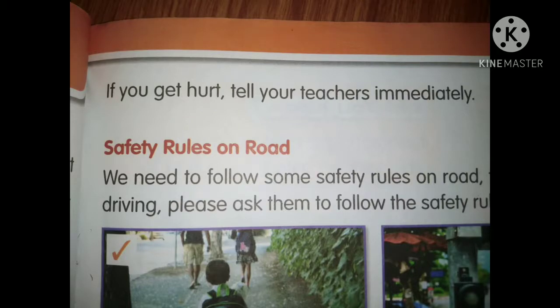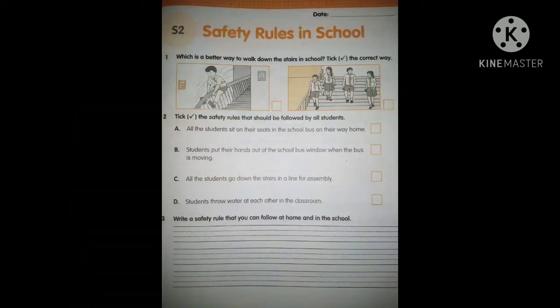Now open your workbook to page number 11 — Safety Rules in School. Write the date. See the first question: which is the better way to walk down the stairs in school? Is the first one correct or the second one? Keep the tick mark. See the second question: take the safety rule that should be followed by all students. All students should sit on their seats in the school bus on the way home — which one is correct? Mark the tick. Students should not put their hands out of the school bus window when the bus is moving.